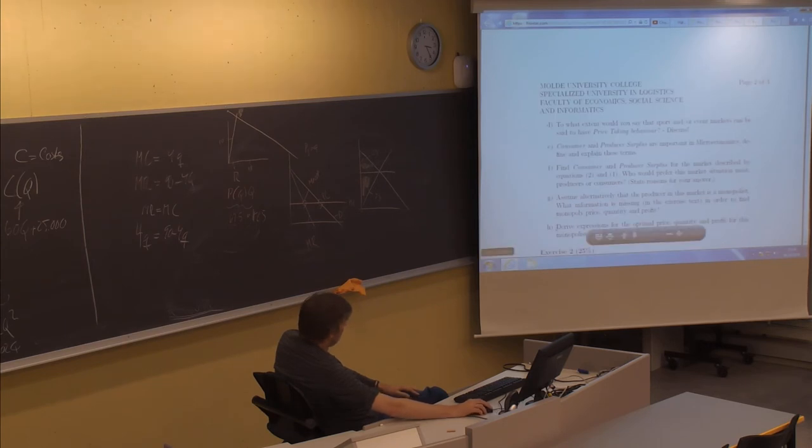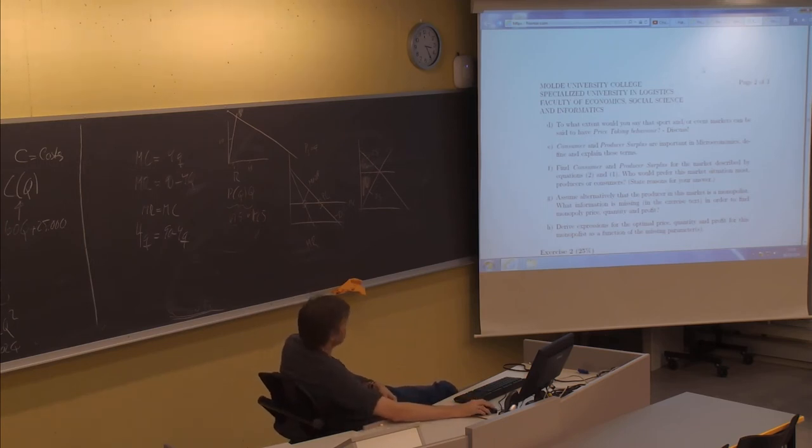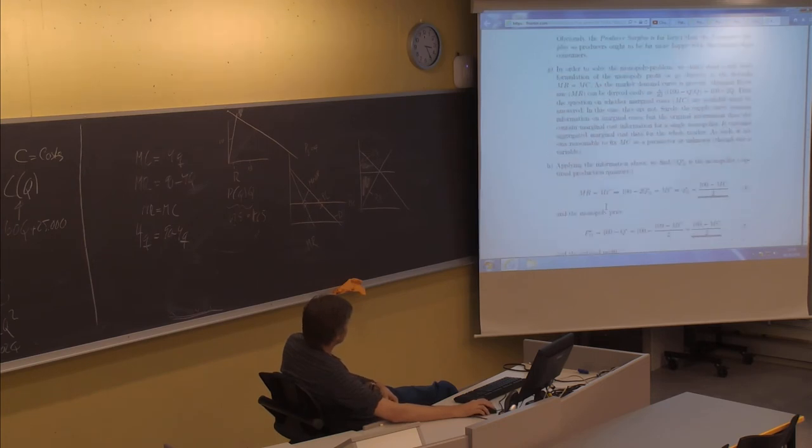So we lack marginal cost information for the monopolist in order to solve the problem. Then, in H, derive expressions for the optimal price, quantity, and profit for the monopolist as a function of the missing parameters. Now we have identified a missing parameter, the marginal cost. Let's call that something and then produce some math where that something is a function related to these unknown marginal cost.